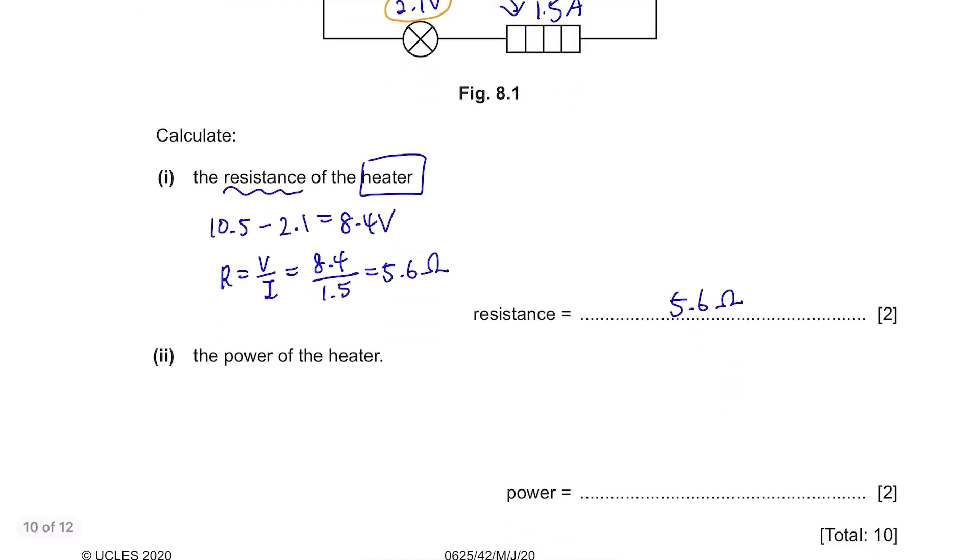The power of the heater: power equals voltage multiplied by current, so 8.4 times 1.5 equals 12.6 watts.